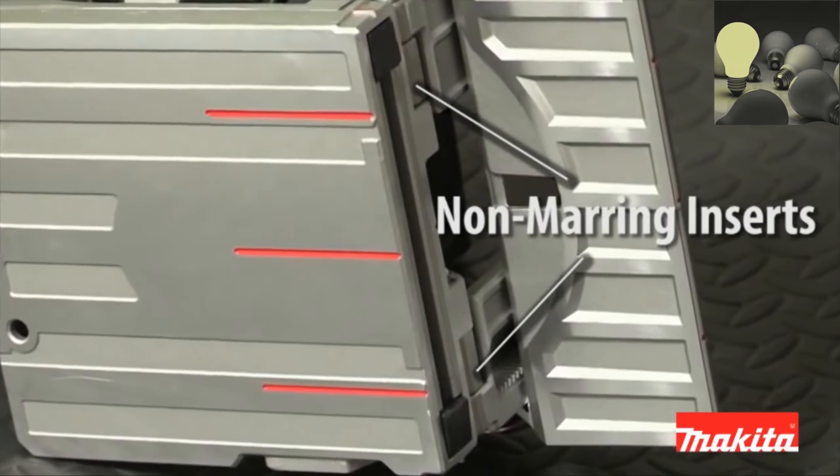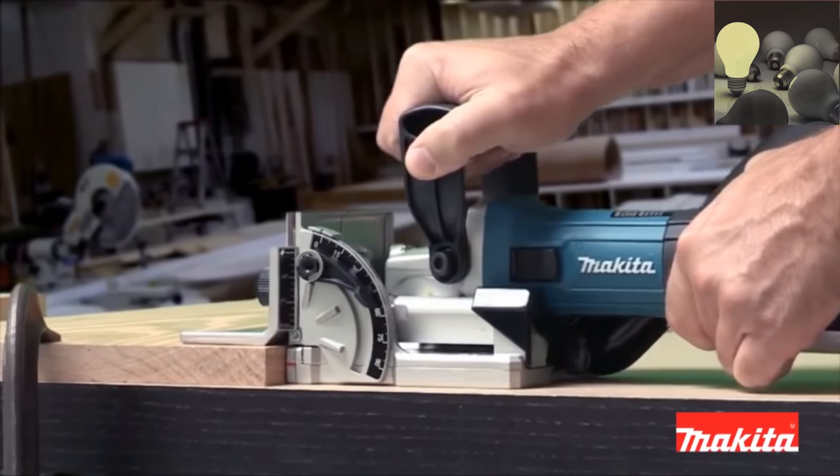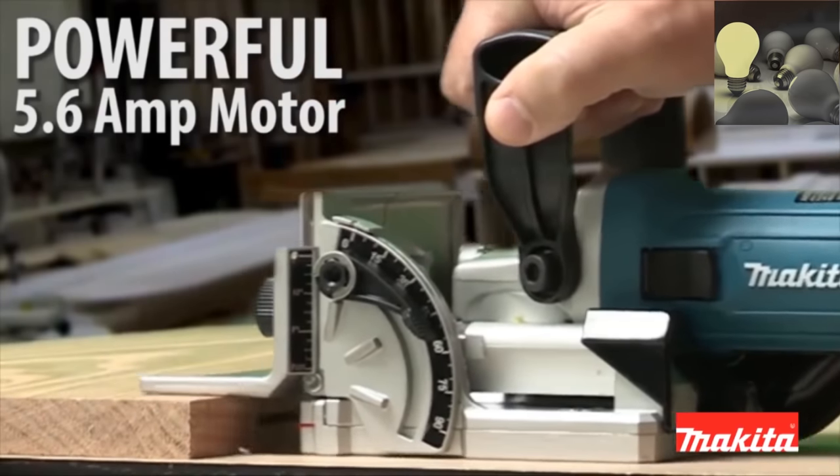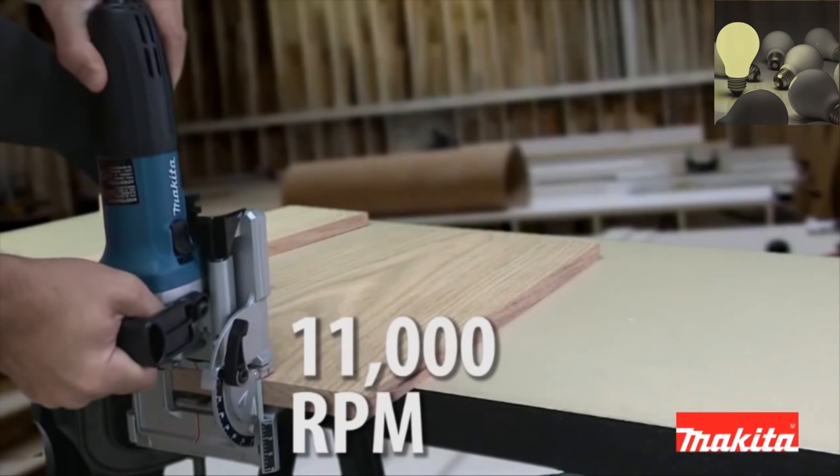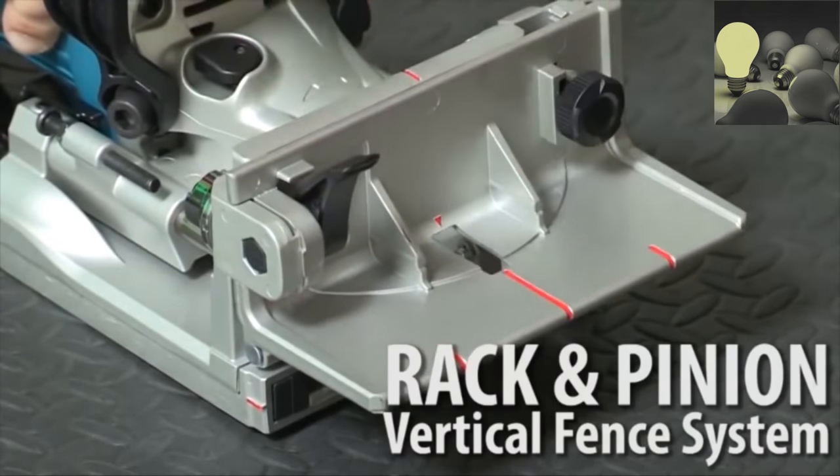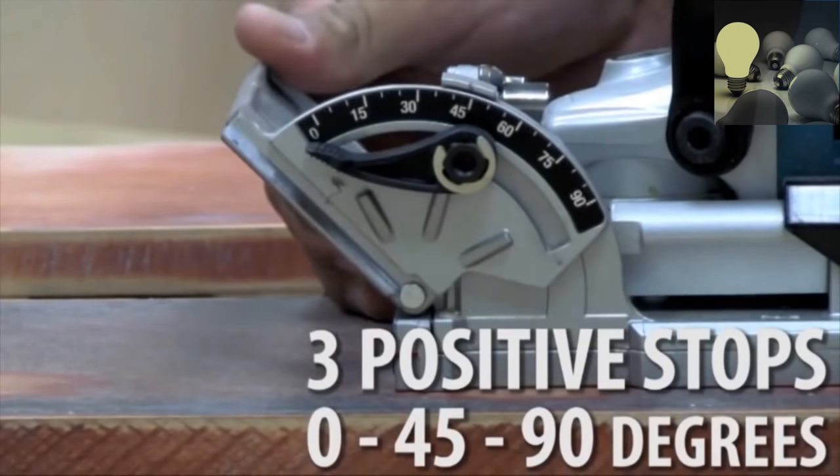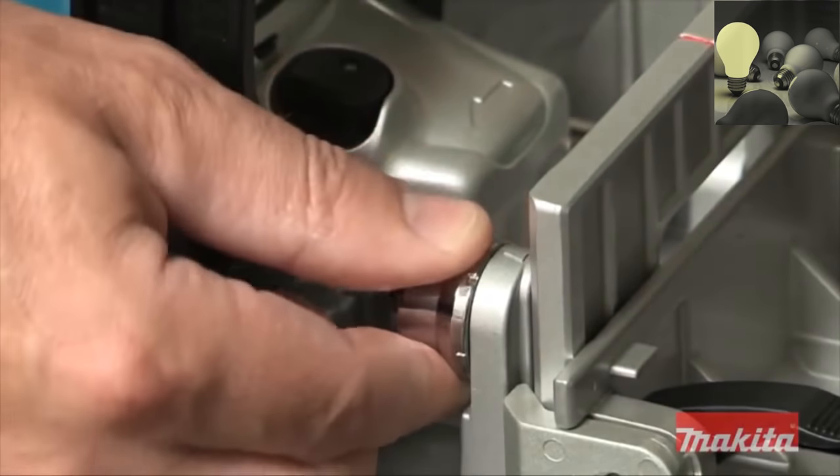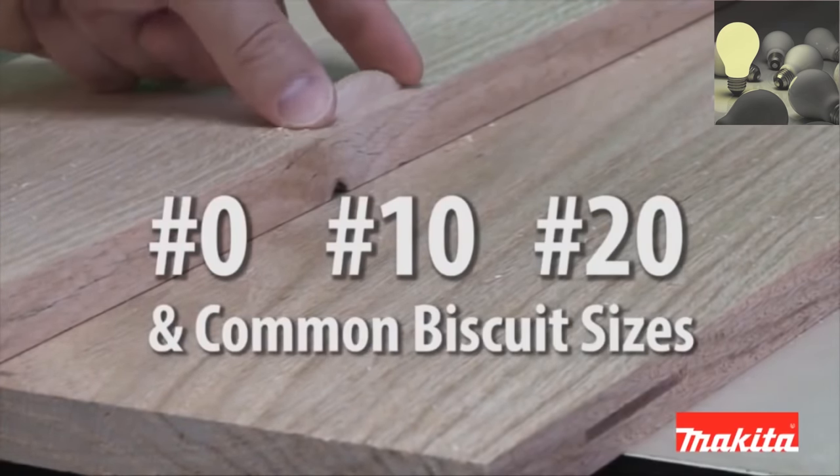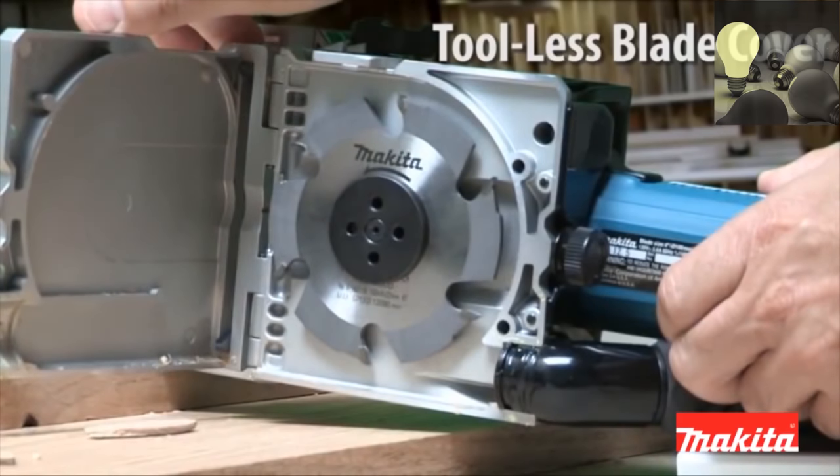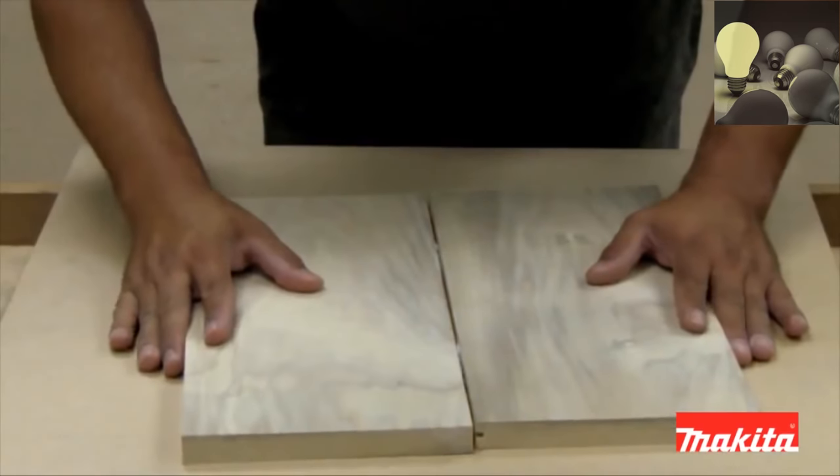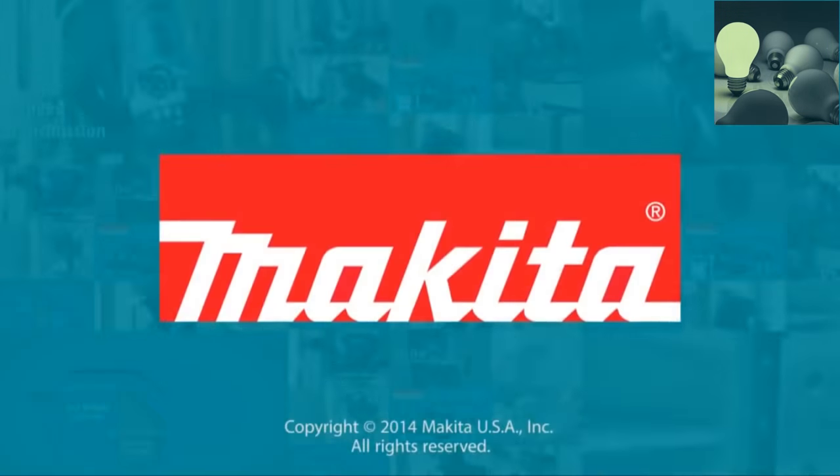The PJ7000 has non-marring rubber inserts engineered to prevent material from slipping. The powerful 5.6-amp motor delivers 11,000 RPM for quick, precise cutting. The rack and pinion vertical fence system is engineered for accurate adjustments with three positive stops at zero degrees, 45 degrees, and 90 degrees. It has six depth settings with one-touch stops and common biscuit sizes. The double insulated PJ7000 also has a tool-less blade cover and shaft lock for easy blade changes. Quick changing blade means cleaner work. The Plate Joiner by Makita.